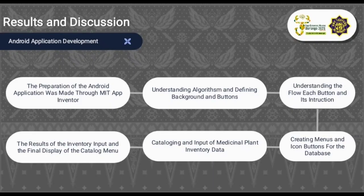Next, Android application development. The preparation of the Android application was made through MIT App Inventor. Next, understanding algorithms and defining background and buttons. Next, understanding the flow of each button and each instruction. Next, creating menus and icon buttons for the database. Next, cataloging and input of medicinal plants inventory data. And last, the result of the inventory input data — the final display of the catalog menu.